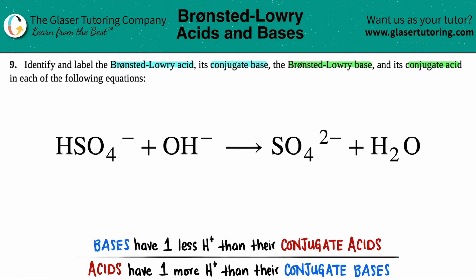The easiest way to do this is to first pick out the pairs — pick out the two species on both sides that look like each other. I like to start from left to right. I have HSO4⁻. Which one on the right side looks very similar to HSO4? They should have the same elements roughly. It's SO4²⁻, so these go together.